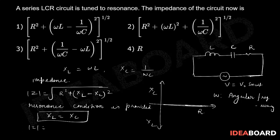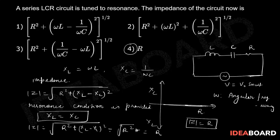So if you put the value, you get mod Z equals under root of R square plus XL minus XL square, which will give you under root of R square only, which will give R. So impedance will be simply equal to the resistance of the circuit. So which option has to be the right choice? Option number 4: R.